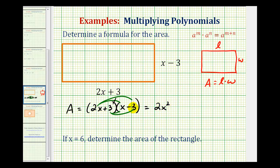2x times negative 3 is negative 6x or minus 6x. And then we have 3 times x, that's plus 3x. And then we have a positive 3 times a negative 3, that's negative 9 or minus 9.